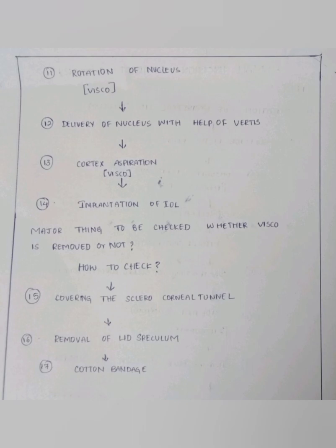The fifteenth step is covering the sclerocorneal tunnel. Another important step is to inject antibiotics — 0.5 ml of dexamethasone injection and 0.5 ml of gentamicin injection — before removing the lid speculum. After this, we should apply the cotton bandage.